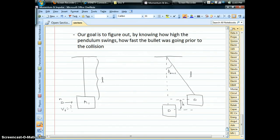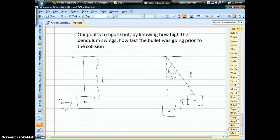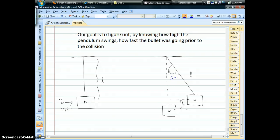And the problem is, what we know is what the maximum angle is that the pendulum swings up after the collision happens. And by knowing that maximum angle, or by knowing the height that it goes up, we should be able to figure out how fast that bullet was going originally.